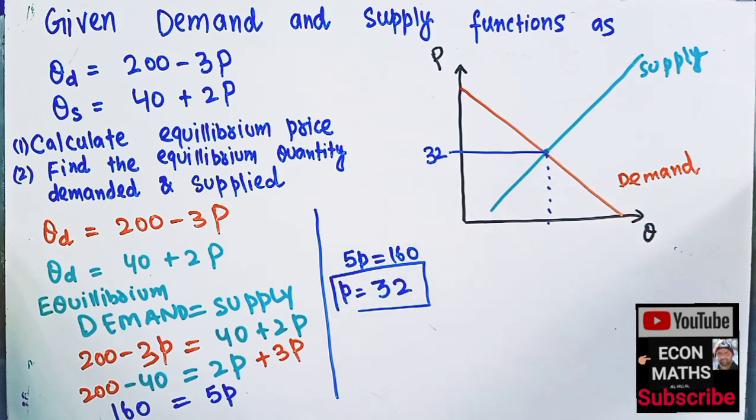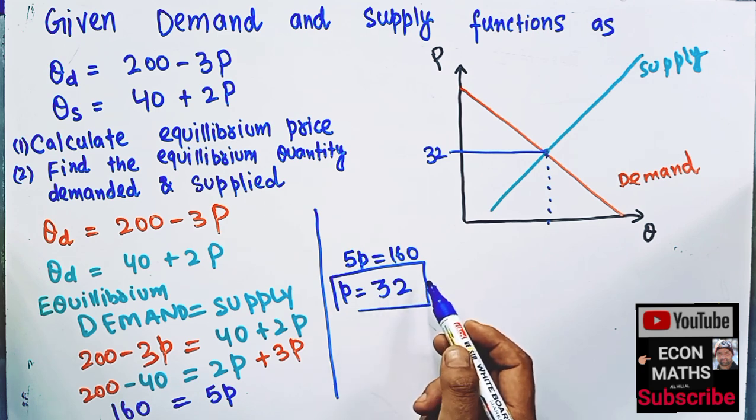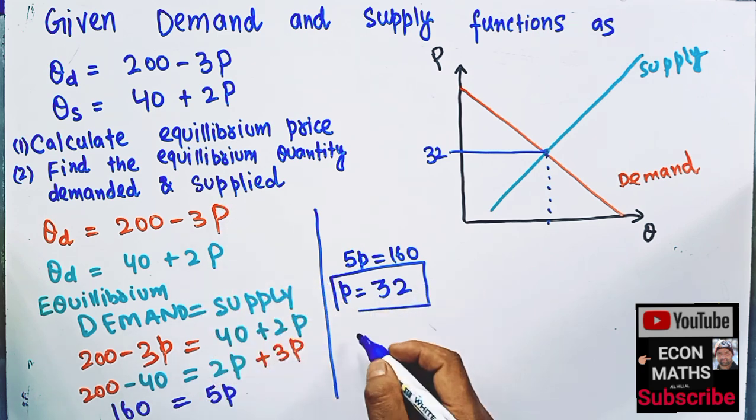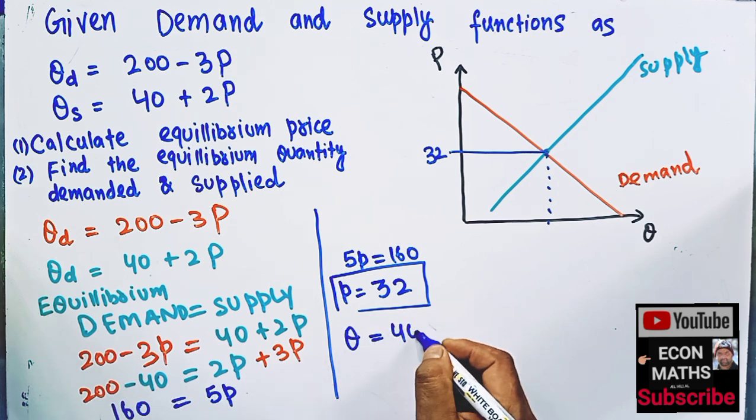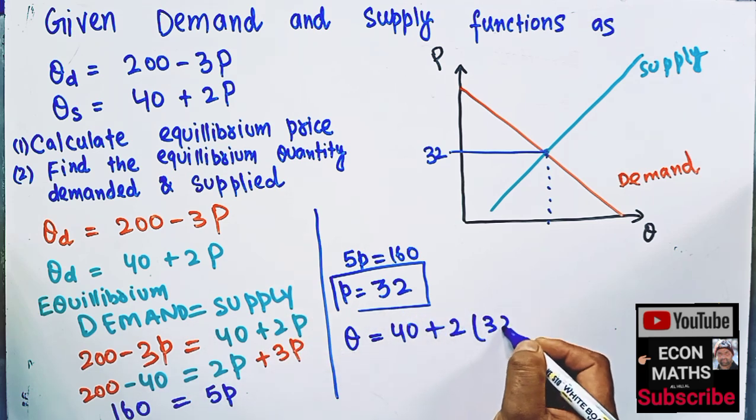Corresponding to this equilibrium price, what is quantity demanded or supplied? Simply plug P is equal to 32, either in demand or supply function. Let's put it into the supply function. That means Q will be equal to 40 plus 2P. So 2 times equilibrium quantity is 32.